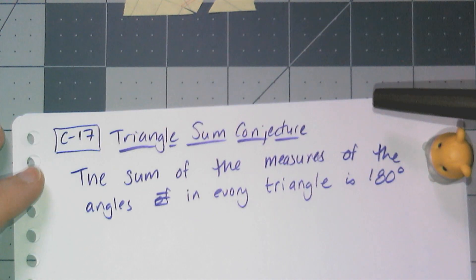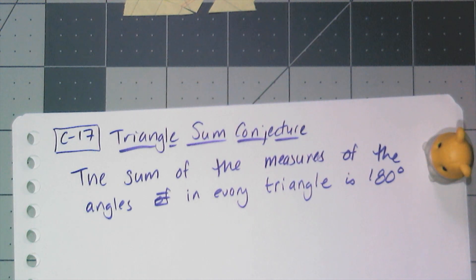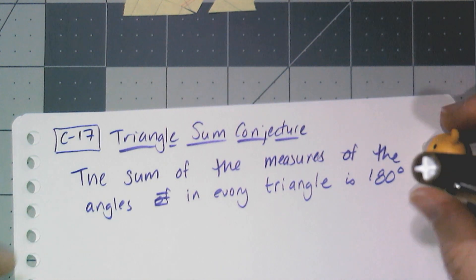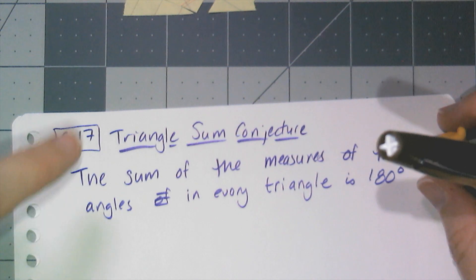The triangle sum conjecture states that the sum of the measures and the angles of any triangle or in every triangle has to be 180 degrees. And that is conjecture 17. Now as a consequence to having this conjecture, I have another little conjecture that's really easy to form and prove.